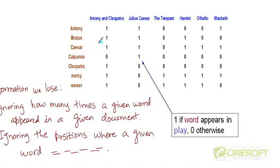For example, we are losing track of which position, at which position Brutus appeared in the play Antony and Cleopatra. We lose this positional information and we lose this count or this frequency information when we generate this matrix.